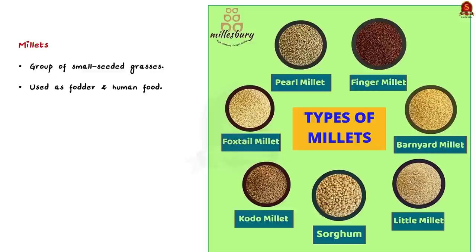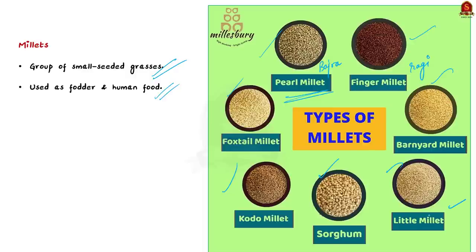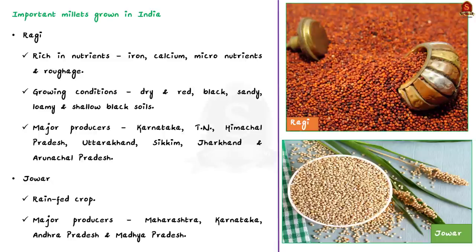Millets are a group of small seeded grasses, widely grown around the world for human food and also for fodder. Some examples include pearl millet (also called bajra), finger millet (also known as ragi), little millet, sorghum or jowar, and proso millet (called varagu in Tamil). The important millets grown in India include jowar, bajra, and ragi. Ragi is a crop of dry regions that grows well on red soil, black, sandy, loamy, and shallow black soils. States producing ragi include Karnataka, Tamil Nadu, Himachal Pradesh, Uttarakhand, Sikkim, Jharkhand, and Arunachal Pradesh. You should always know the type of conditions under which crops are grown and the major producing states.